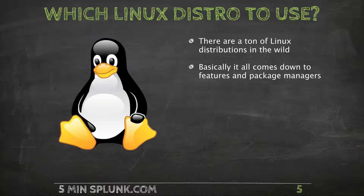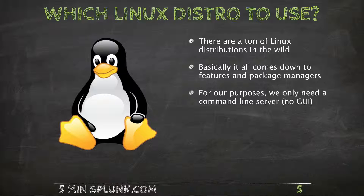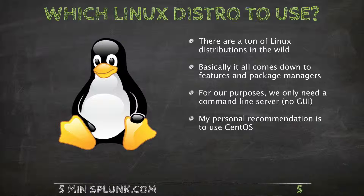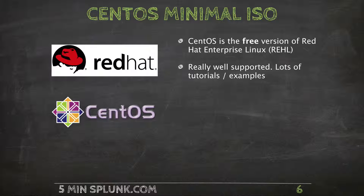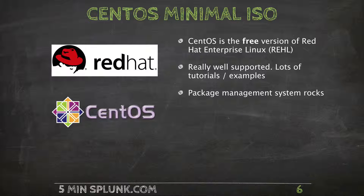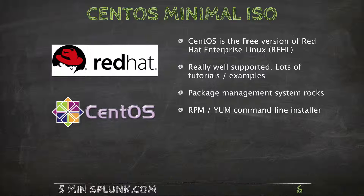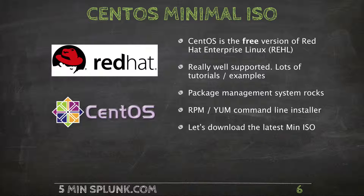Basically, it all comes down to features that are baked in and package management utilities. For our purposes, all we want to do is set up a lightweight command line VM — we're not going to use any graphical user interface. So my personal recommendation and what I always use is CentOS. Basically, it's the free version of Red Hat Enterprise Linux. It's really well supported, and if you go to websites like How To Forge or Stack Overflow, you'll find tons of tutorials and examples. I personally really like the package management utilities — we'll be using RPM and yum from the command line to install libraries, update utilities, and install applications. So without further delay, let's go out and download the minimal ISO.